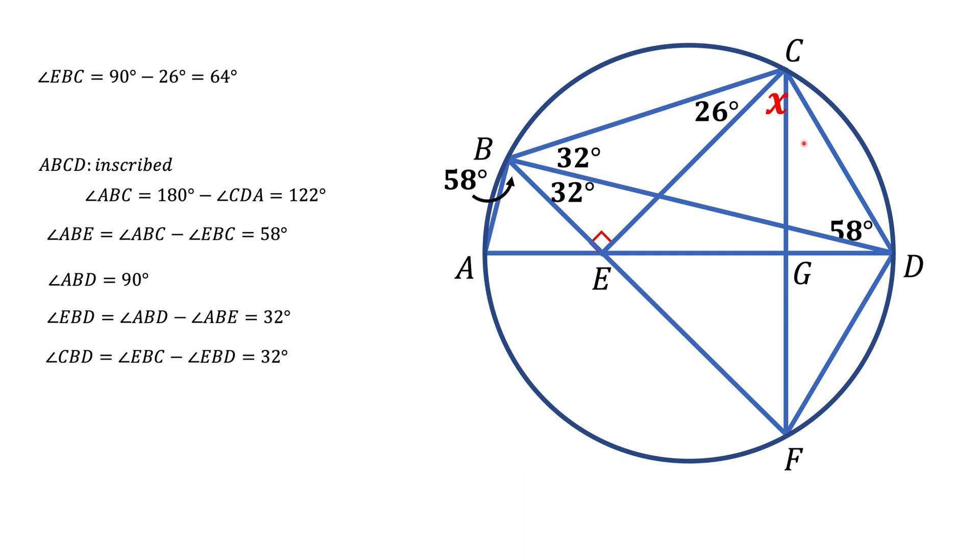Now look at this 32-degree angle FBD. This is an inscribed angle that intercepts arc FD. But notice angle FCD is also an inscribed angle that intercepts the same arc FD. Therefore, those two inscribed angles are congruent, so this angle is also 32 degrees.